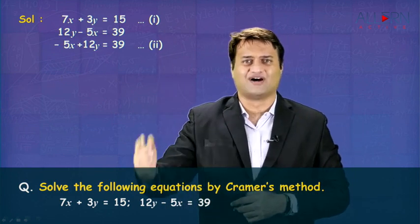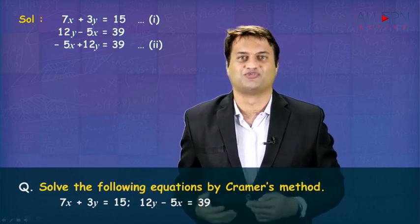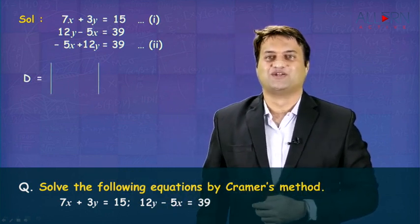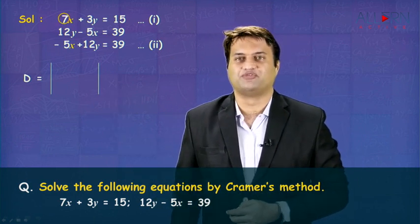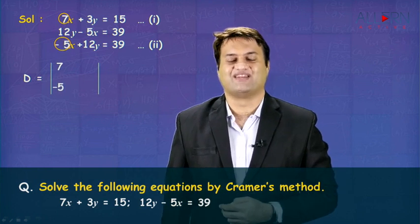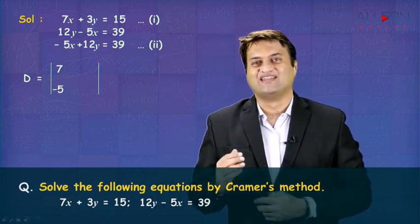Once we get the two equations in the required form, we write it one below the other. Now, it is time for us to form and find the three determinants. The first determinant is denoted by D. In D, in the first column, you will write the coefficients of x, that is 7 and minus 5. In the second column, you will write the coefficients of y, that is 3 and 12.